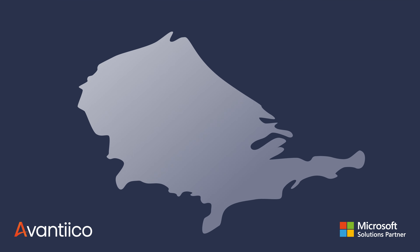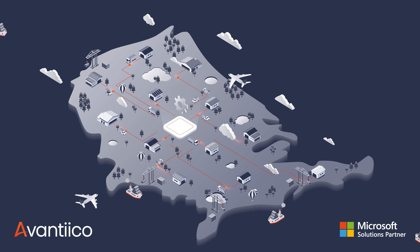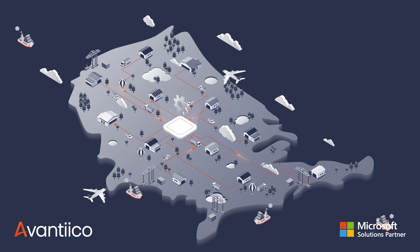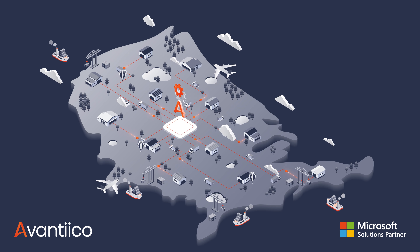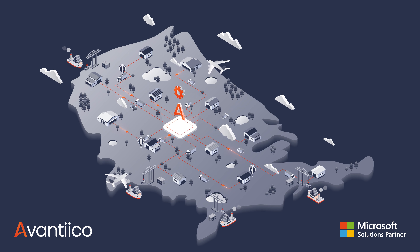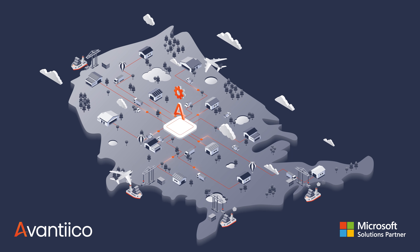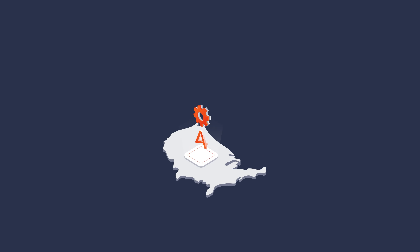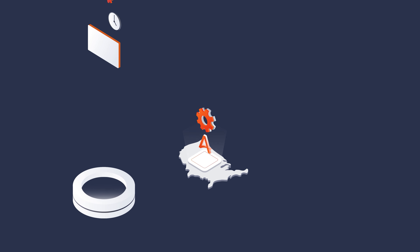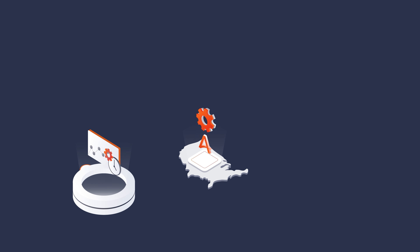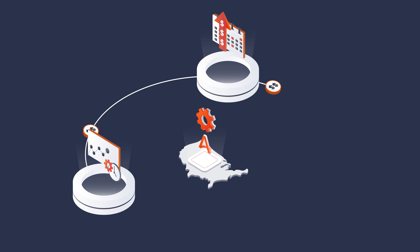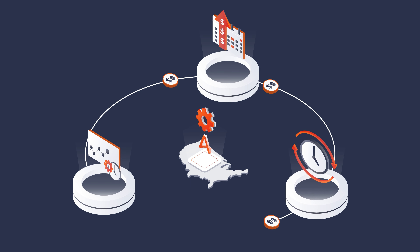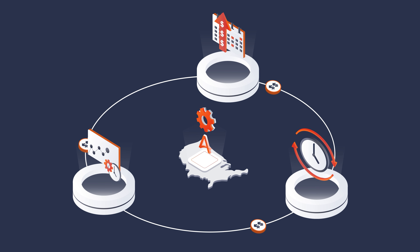With Avantico's 3PL billing automation for Microsoft Dynamics 365 Finance and Supply Chain, you can improve cash flow by instantly invoicing thousands of logistic transactions to your customers. Avantico automates real-time data collection from all leading warehouse systems. The solution speeds up the billing process and saves your third-party logistics business time and money.